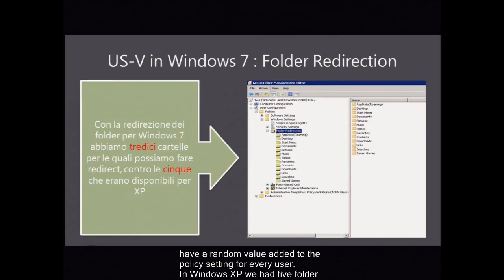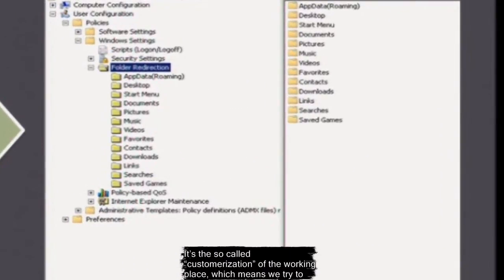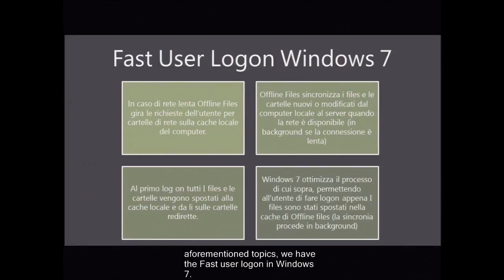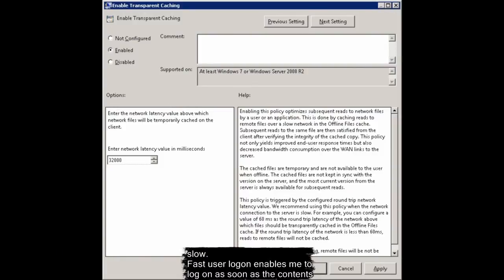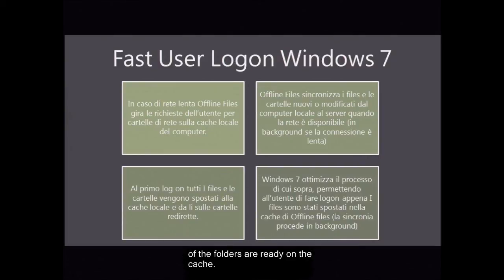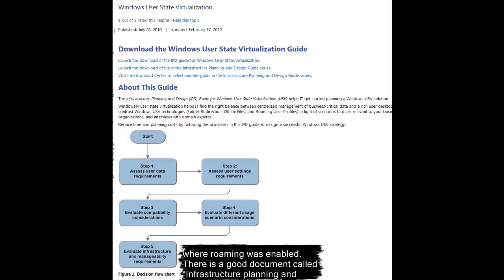In Windows XP, we had five folder redirections available. In Windows 7, we have 13 redirections we're able to use. It's the so-called customization of the working place, which means we try to give the user an environment he likes as much as possible. Connected to all the aforementioned topics, we have fast user logon in Windows 7. The first network access, including folder redirections and offline files, may be really slow. Fast user logon enables us to log on as soon as the contents of the folders are ready on the cache, so our logon time is much shorter than in previous versions where roaming was enabled. There is a good document called Infrastructure Planning and Design for User State Virtualization that helps us analyze our situation in five steps. The purpose is to give advice on what is worth virtualizing and what is not.